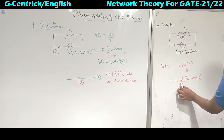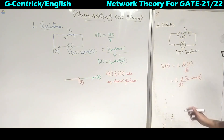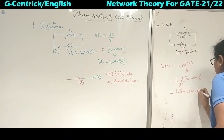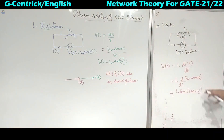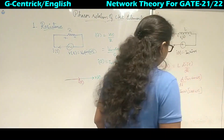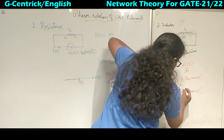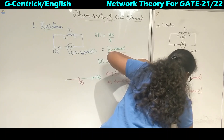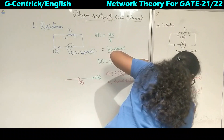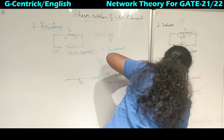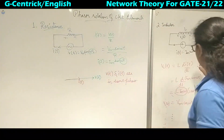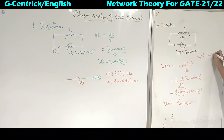Since only t is involved in differentiation, ω comes out, and Im and L are constants. So we get VL(t) = L · Im · ω · cos ωt. We can write this as Vm cos ωt, where Vm = L · Im · ω. This is the voltage across the inductor.